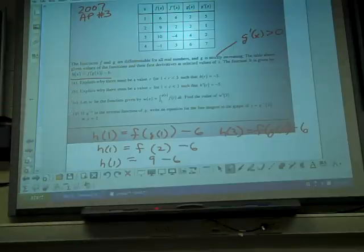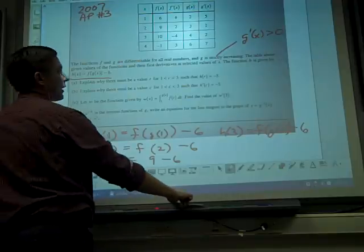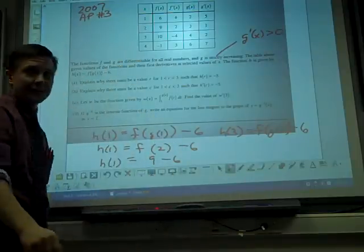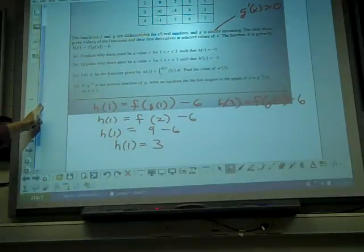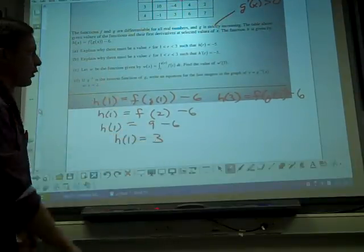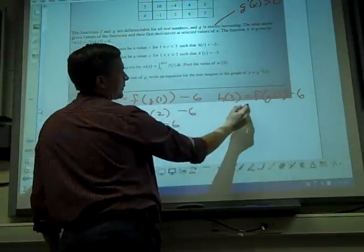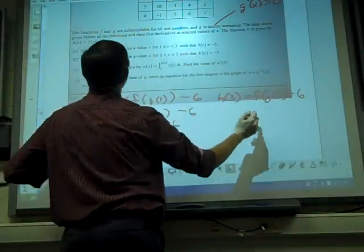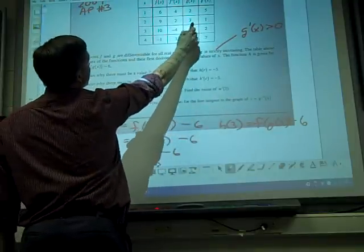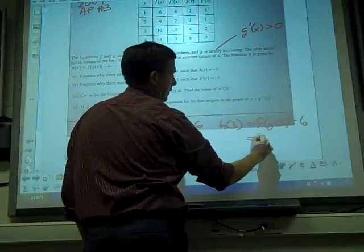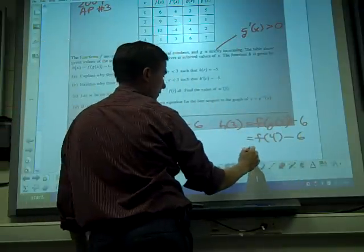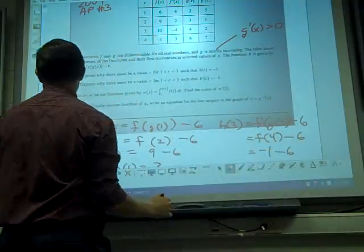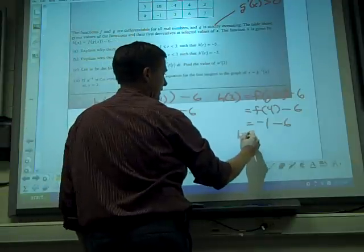The first one says explain why there must be a value r between 1 and 3 such that h of r equals negative 5. And right away you should start to feel like this is IVT. So the first thing I'm going to do is I figure out h(1) which I've done. I plug in 1 and I get 3. I'm also going to do 3. h of 3 is f of g of 3 minus 3. If I use the table, g of 3 is 4. So I get f of 4 minus 6. f of 4 from the table is negative 1. So negative 1 minus 6, h of 3 is going to be negative 7.